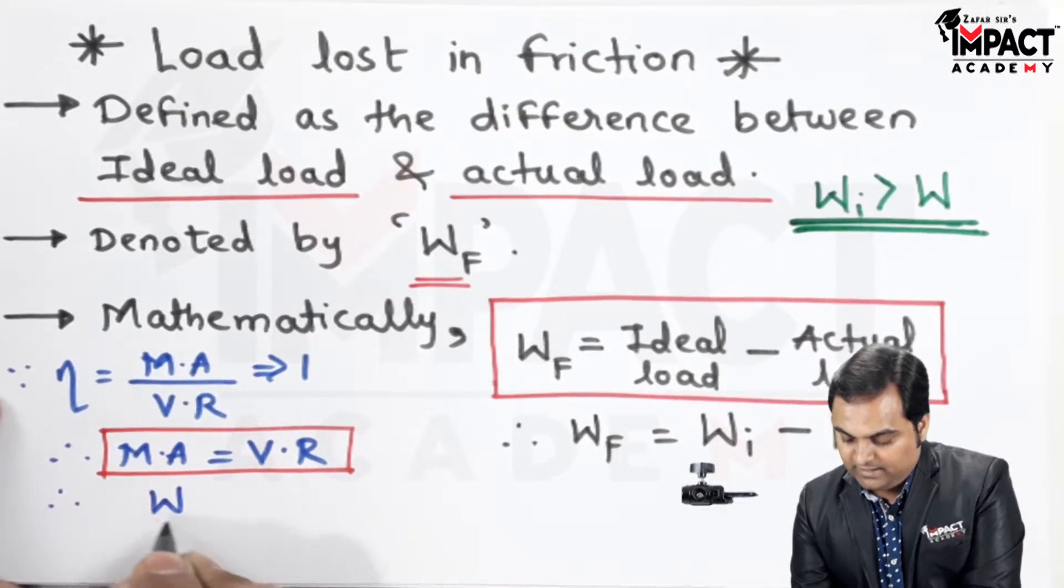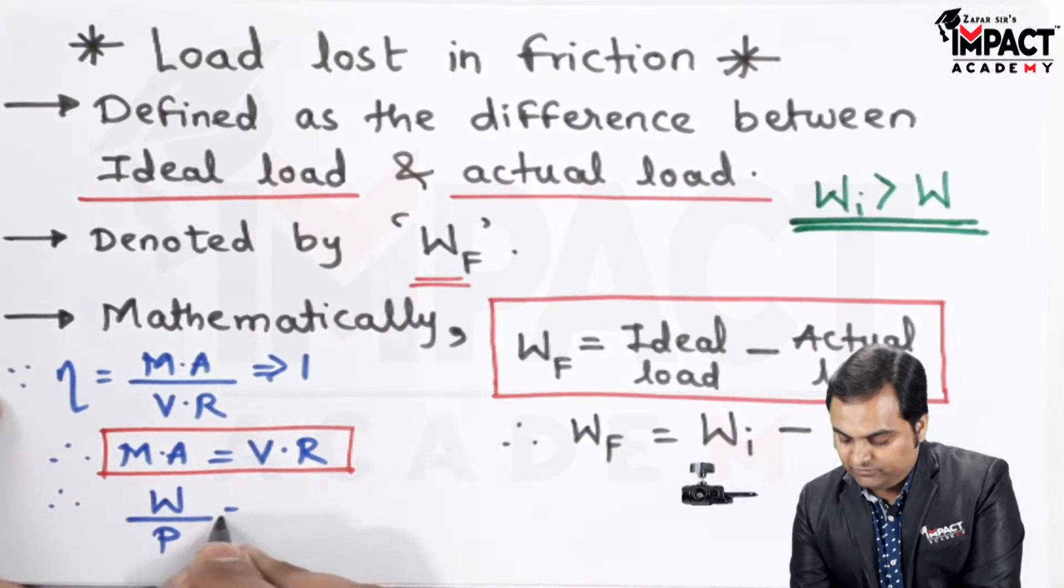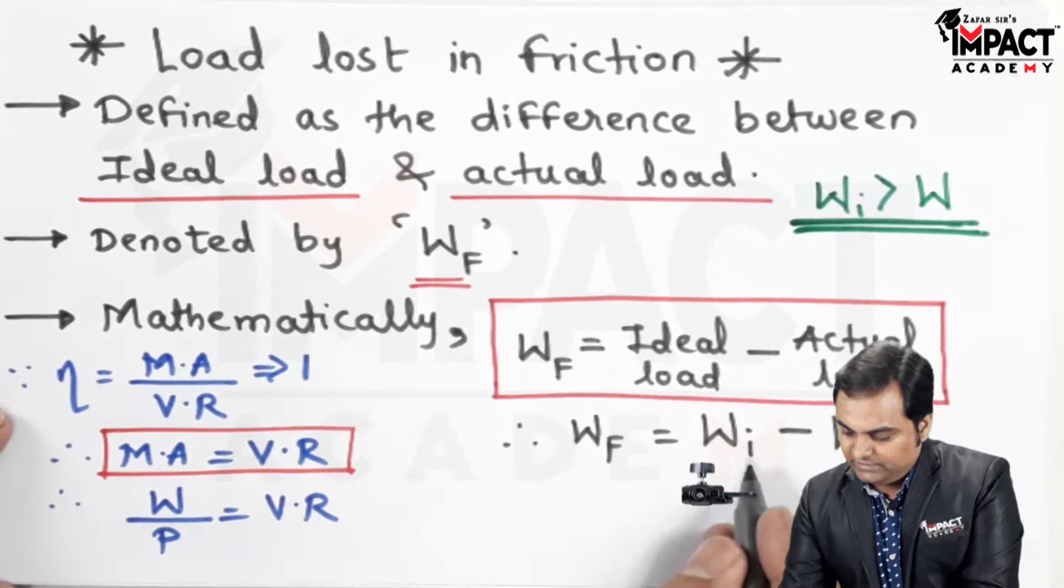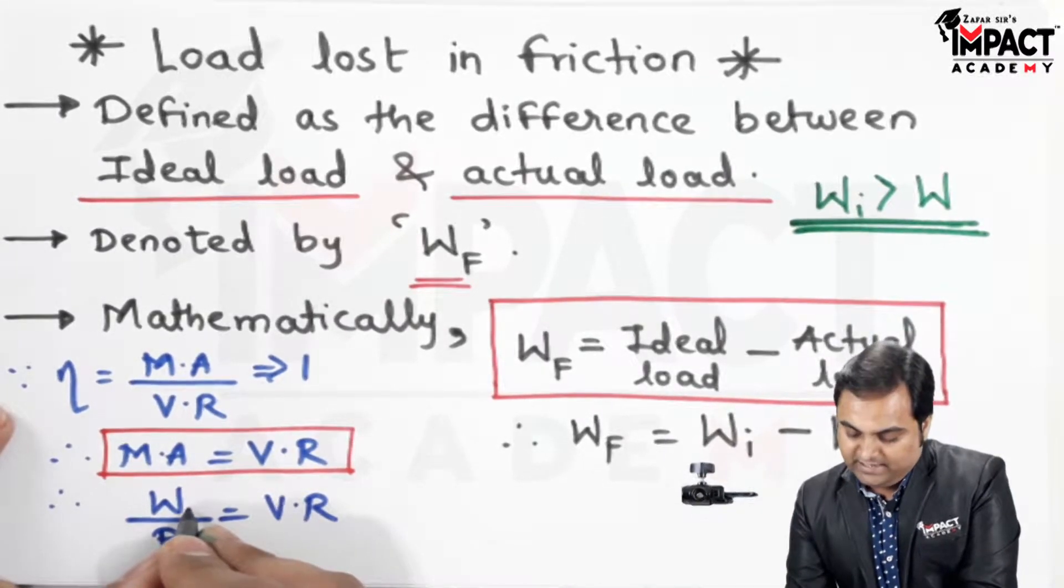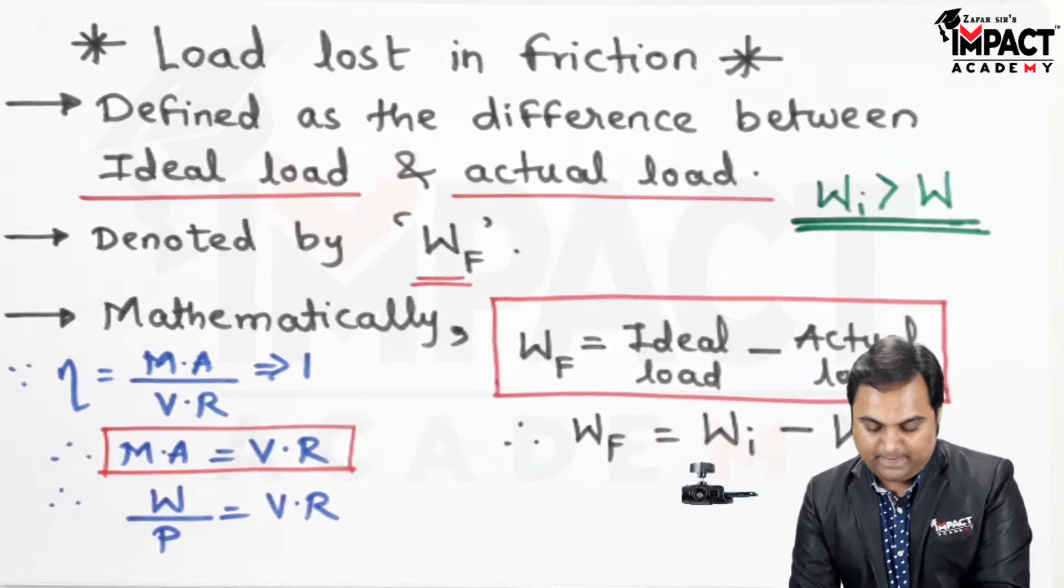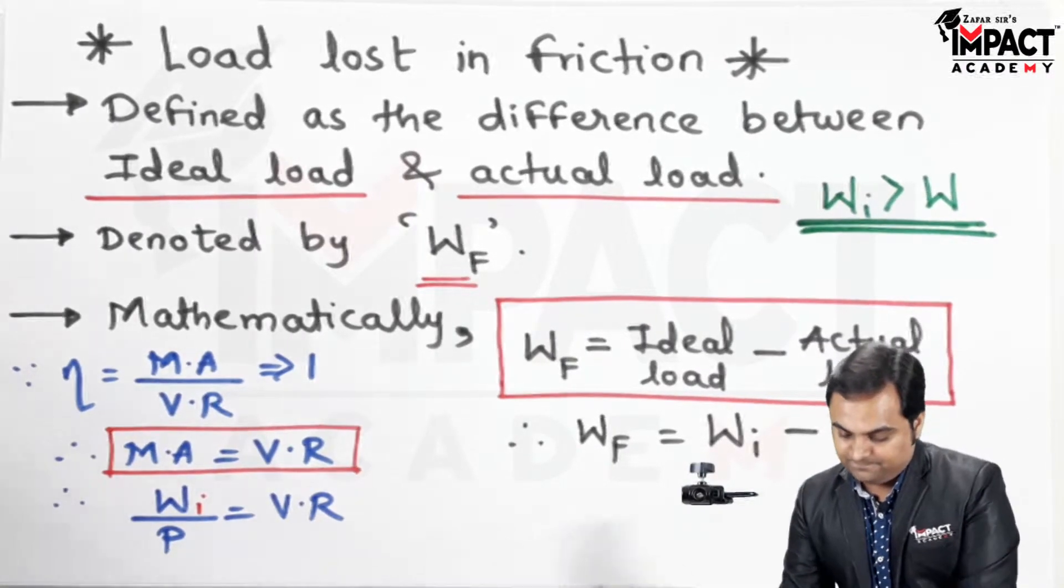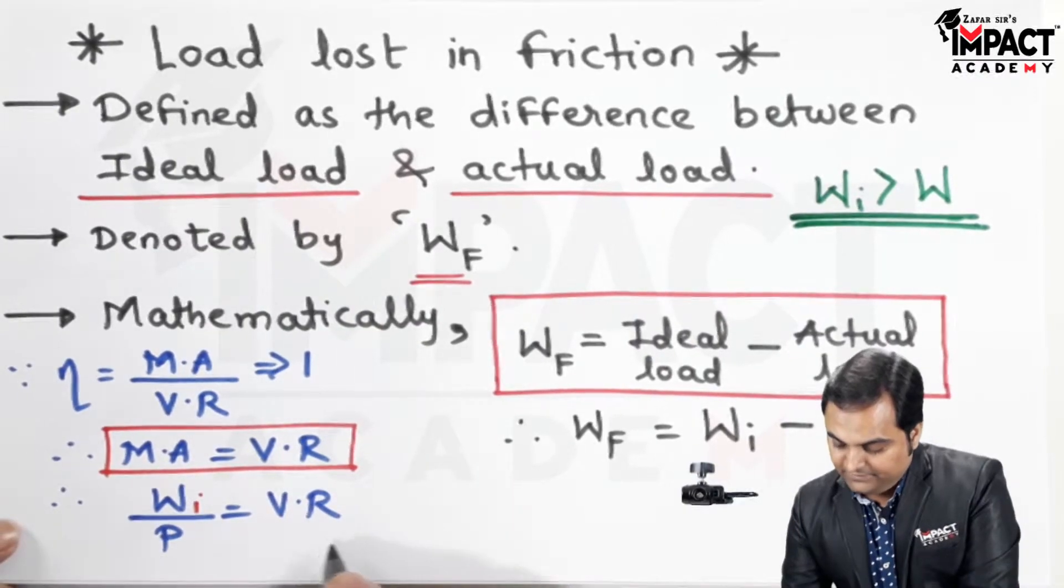Therefore MA, which is load upon effort, is equal to VR. And since we want ideal load, so here I would be adding a suffix i. So therefore W_I becomes P into VR.